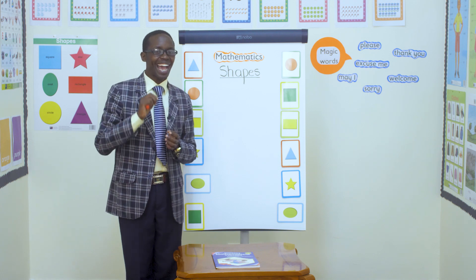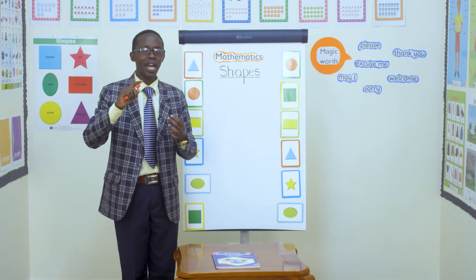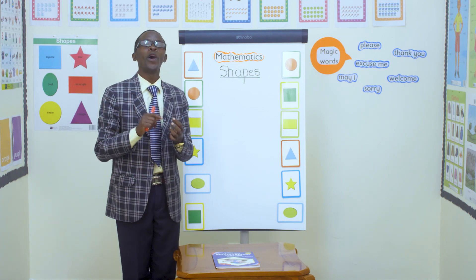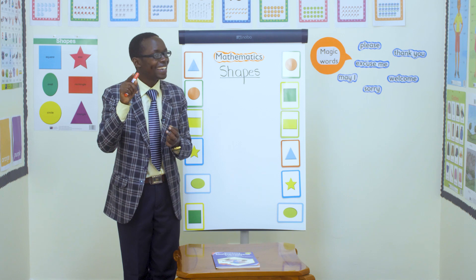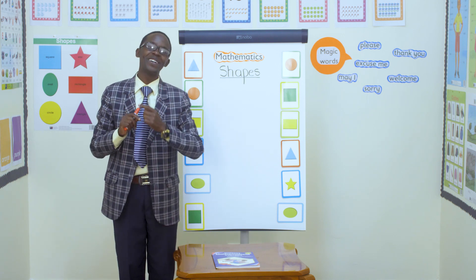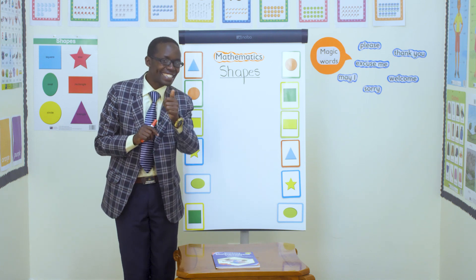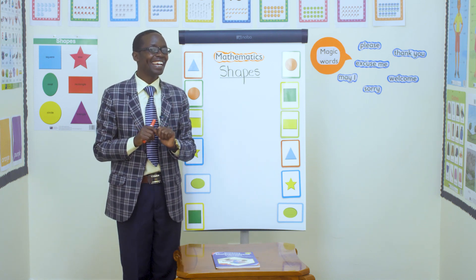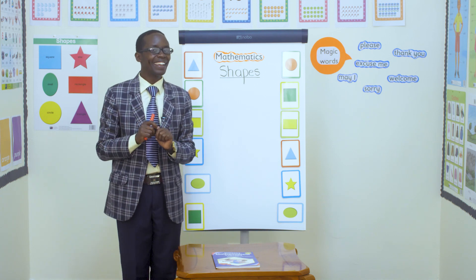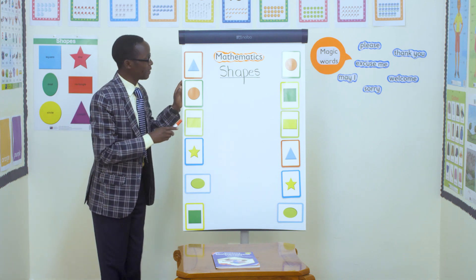One? Rectangle. Wonderful. Rectangle. Another one? Very good. Circle. Rectangle. Good boys and girls. Another one? Star. Another one? Oval. And another one? Very good. Now let's continue singing our song.